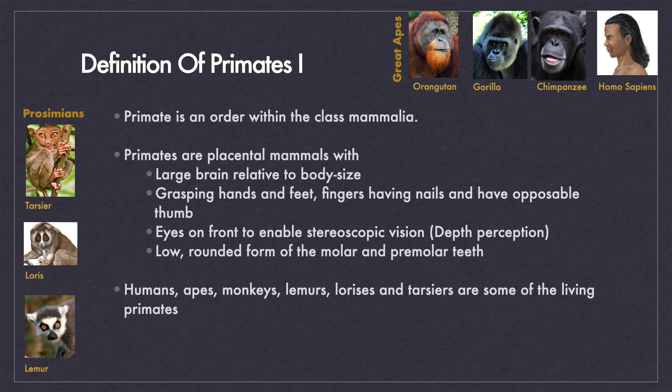Primate is an order within the class Mammalia. Primates can be defined as placental mammals having a large brain relative to their body size. The fingers on their hands have opposable thumbs that help them grasp the branches of trees. All primates barring humans can use toes on their feet to grasp things. Primates have eyes on the front of their face, which provide them depth perception. Molar and premolar teeth of primates are low and more rounded than other mammals. Humans, apes, monkeys, tarsiers, and lemurs are some of the primates that exist today.